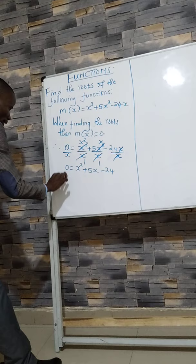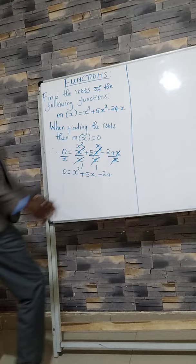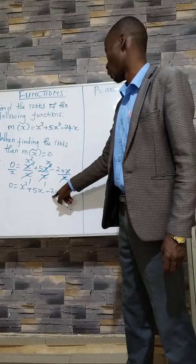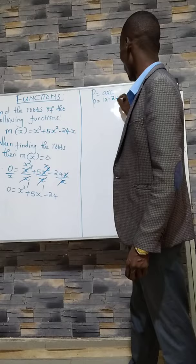We solve using factorization method. We have our product as a times c: the coefficient of x² multiplied by the constant term. Our product is 1 times -24, which is -24.